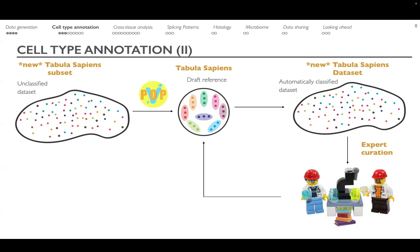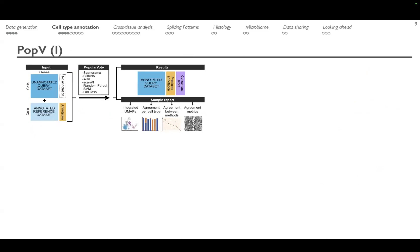PopV solves the problem of having an existing annotated reference dataset corresponding to a fraction of the data and an unannotated query dataset. We have a panoply of methods — some self-supervised, some supervised — and the idea is: what if we used all of them to output an annotated query dataset containing predicted annotations, consensus scores, and metrics that help experts in the reviewing step?